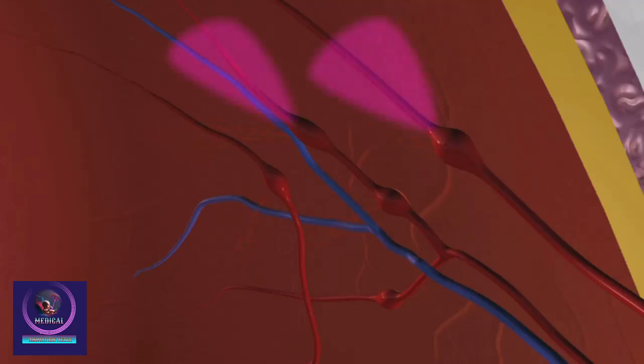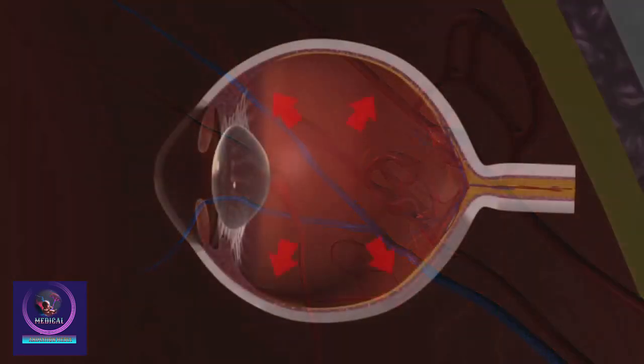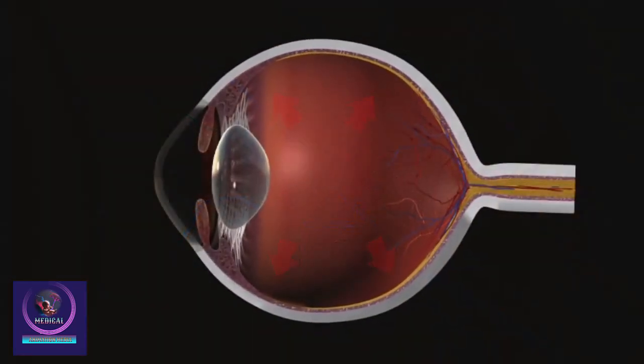In some people, the blood vessels can also become blocked and stop providing nutrients and oxygen to parts of the retina. Sometimes new blood vessels grow to replace the damaged ones, but these are not strong and so more fluid leaks into the eye.